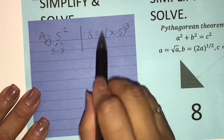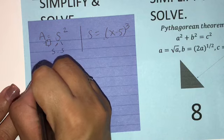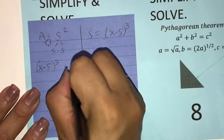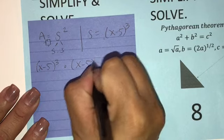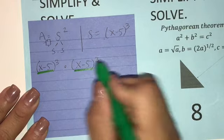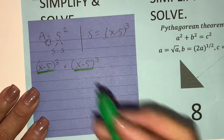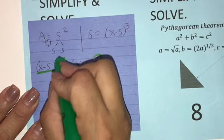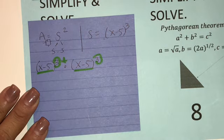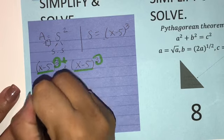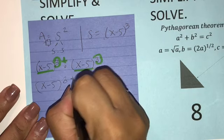which is equal to s times s. I know that s equals x minus 5 to the 3rd. So I'm going to multiply this times itself twice, which is going to be x minus 5 to the 3rd times x minus 5 to the 3rd. So the bases are the same. That means that we're going to add the exponents.